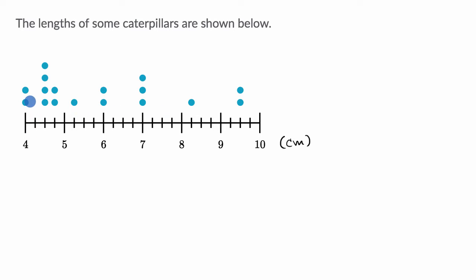We have two caterpillars that are four centimeters long. These three dots show we have three caterpillars that are seven centimeters long. Each dot represents a caterpillar whose length we are measuring, and it allows us to see how those lengths are distributed.